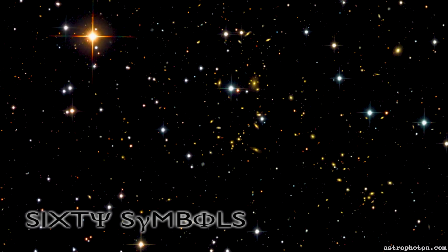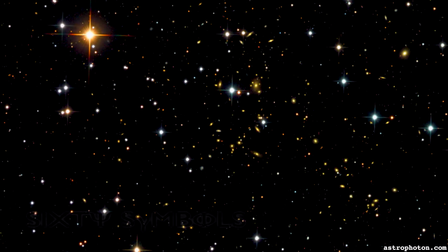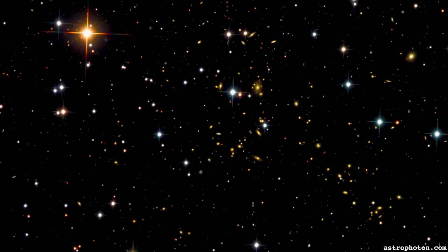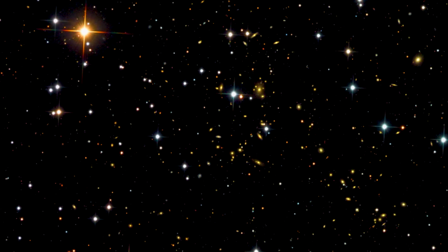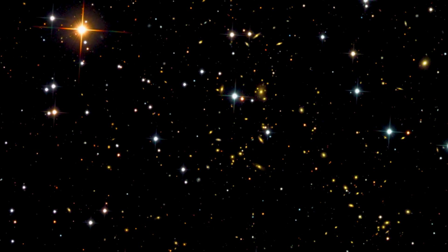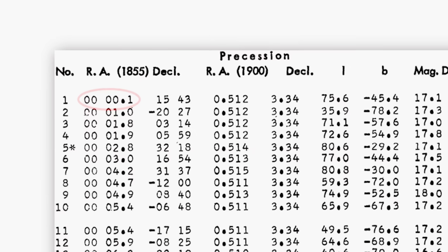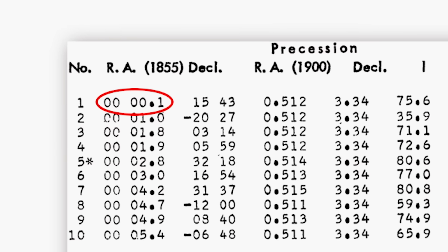This video was actually inspired by the last video we filmed. In the last video, we looked at a particular object - it was Abel1 for Deep Sky Videos. And you asked me, why is this number one? And I said, it's got the lowest coordinates in the catalog, it's the closest to zero. And that sparked an idea - is there anything out there at 0,0 in celestial coordinates?